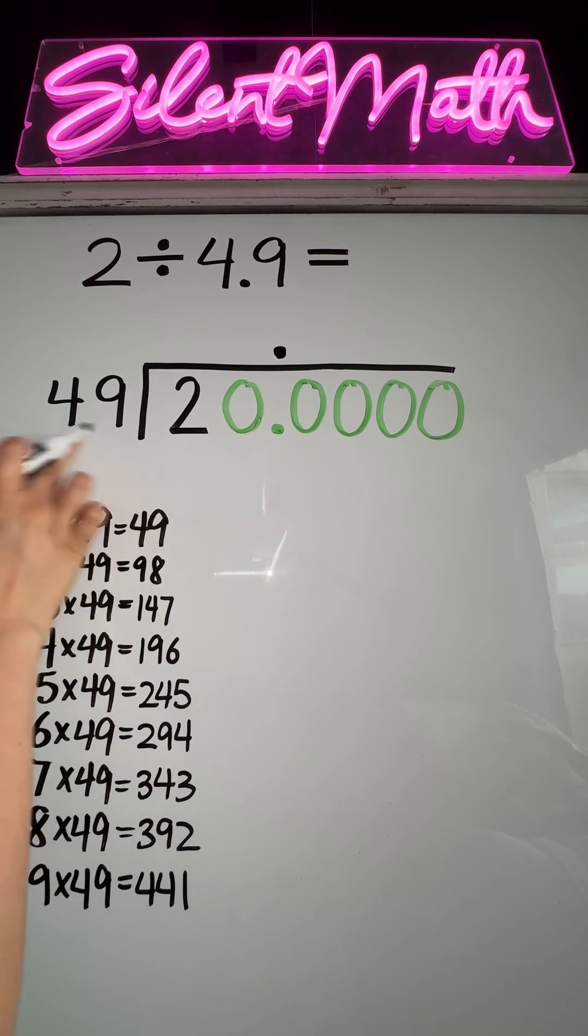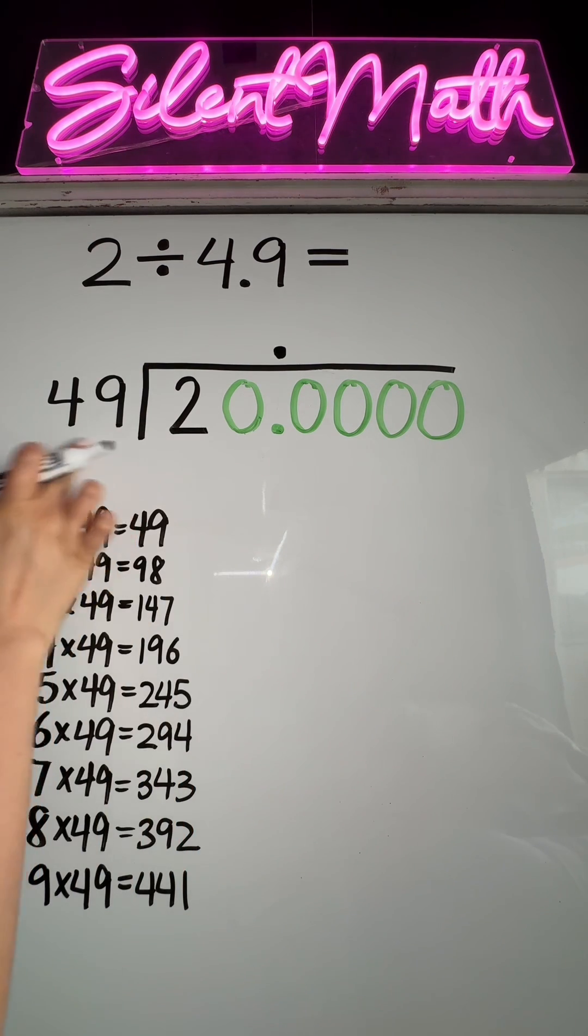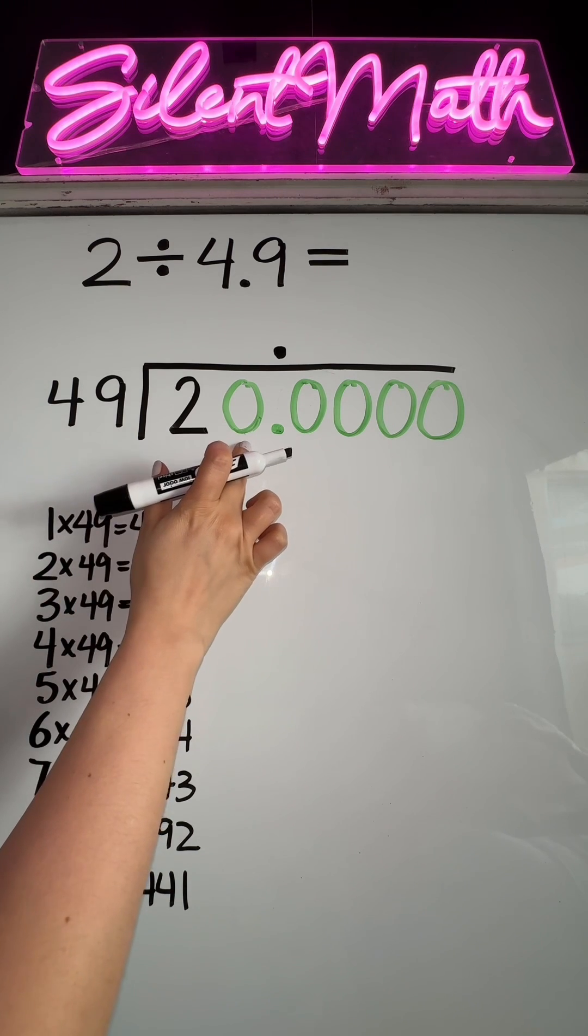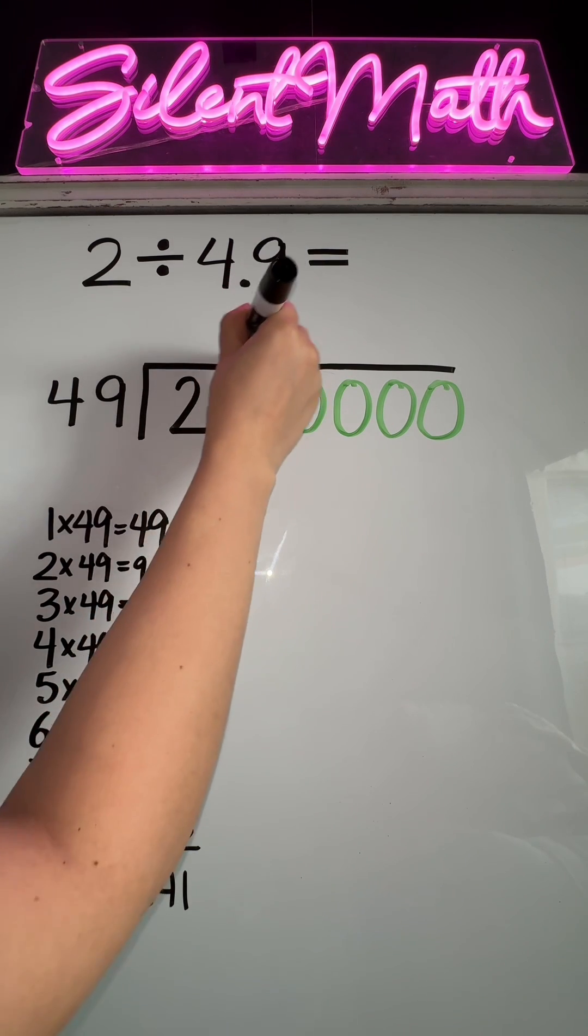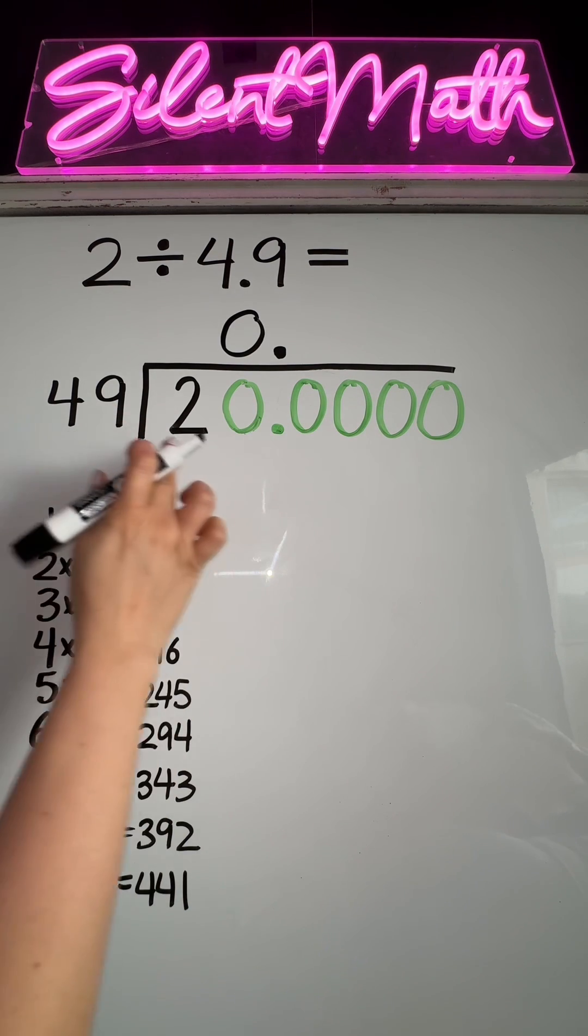How many groups of 49 can go into two? Only zero times. So we're going to extend it to 20. How many groups of 49 can go into 20? It's still zero, but I will add a zero here. We're going to move on and add another digit. How many groups of 49 can make 200?